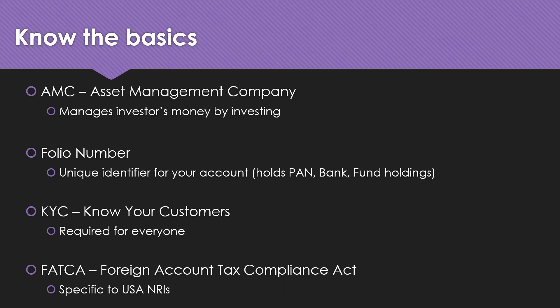The next concept is a folio number. When you open an account with AMCs like HDFC Mutual Fund or UTI Mutual Fund, before you can purchase units you have to create a folio number. You can think of folio numbers as equivalent to bank accounts — if you think of AMCs as banks like HDFC or SBI, folio numbers are like your bank accounts. Under the folio number, it will show your PAN number, the bank account where money is deducted when you purchase a mutual fund, and where the money goes when you sell.